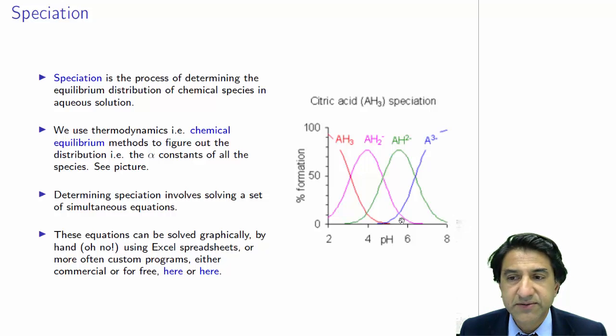So over here we have the alpha zero curve, where A3- has no hydrogens joined onto it. Here we have the AH curve with charge 2- in green, AH2 1-, and then the AH3 undissociated species at low pH, where there are so many hydrogens in the solution that they all attach, all three of them attach to the A3- species.